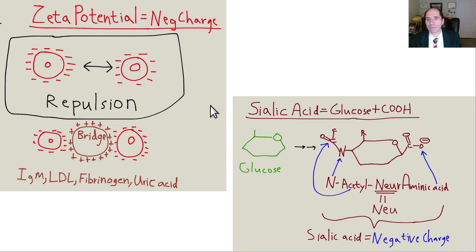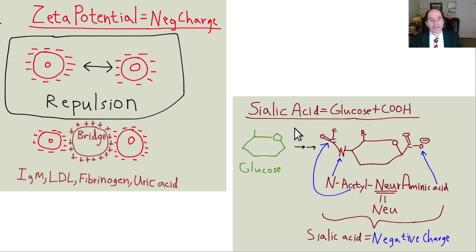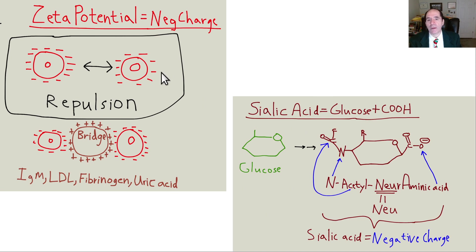Normally, red blood cells have a negative charge all around their outer surface called the zeta potential. The negative charge is produced by the sialic acids, which are very much like a molecule of glucose with a carboxylic acid on it. In addition to the sialic acids, you'll also have cholesterol sulfates, which add to the negative charge on the outer surface. Molecules that are able to overcome the zeta potential and stick red blood cells together have to be big enough in size and have a positive charge on their outer surface. IgM antibodies, LDL cholesterol, fibrinogen — the major clotting protein — and uric acid will all do that.